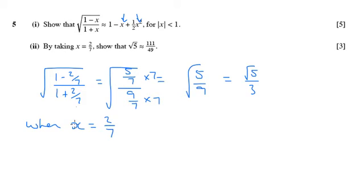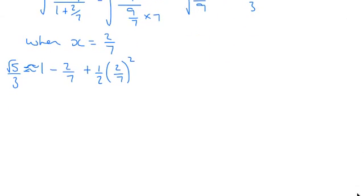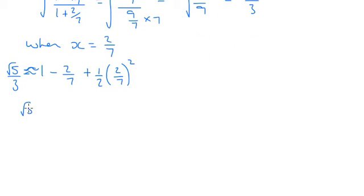So when x equals 2/7, we're going to have 1 minus 2/7 plus a half of 2/7 squared. That would be equivalent to root 5, or roughly equivalent, approximately equal to root 5 over 3. So an approximation for root 5 over 3 is 1 minus 2/7, what's this going to be? This is going to be plus 4 over 98.